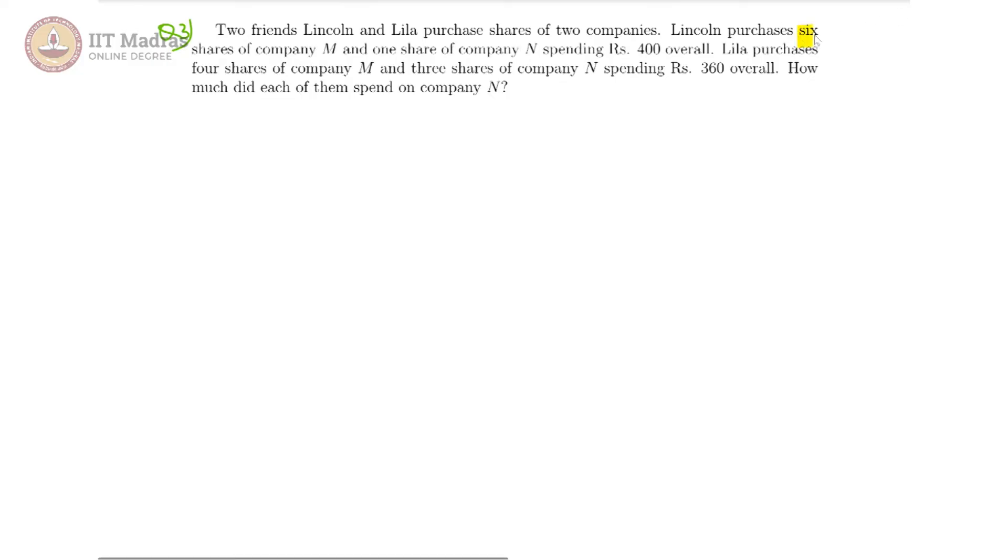Lincoln purchases six shares of company M and one share of company N and overall spends 400. This can be encapsulated as if the company M's share price is PM and for N it is PN, then we can say that 6 PM plus 1 PN is 400.